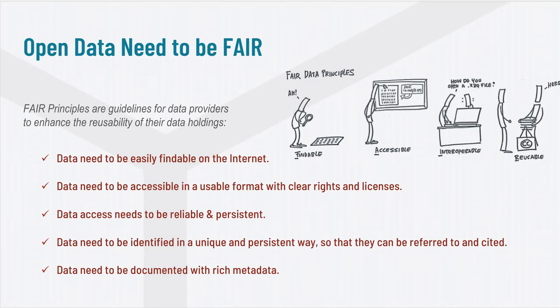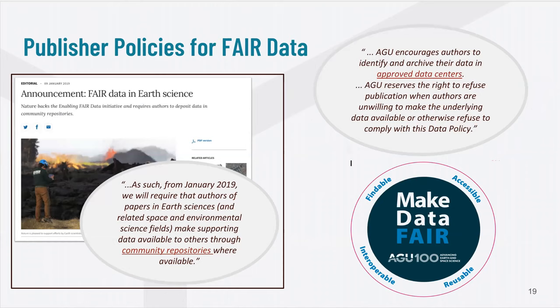In the last year and a half, this has led to new author guidelines by certain publishers, with more coming all the time. Nature and AGU have primarily been leading this movement. Nature states that as of January 2019, they require that authors of papers in their journals make their data available through community repositories. AGU similarly encourages authors to submit data to approved data centers, and AGU reserves the right to refuse publication when authors are unwilling to make their data publicly available.